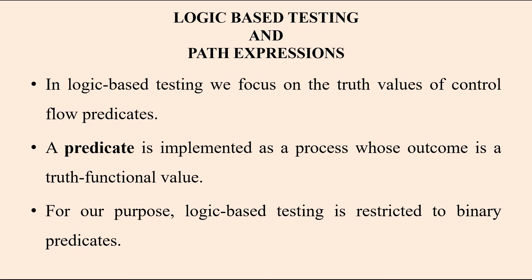In logic-based testing we normally look at control flow predicates. A predicate is one kind of function which gives only a false value or true value — one boolean value. It is implemented as a process whose outcome is a truth functional value. The truth functional values are either true or false, yes or no, or 0 or 1. Whenever a function executes and gives boolean values, we call such a function a predicate.